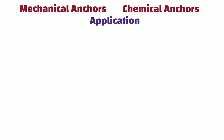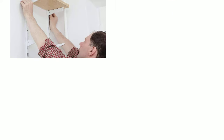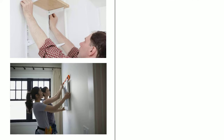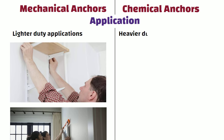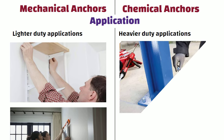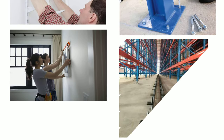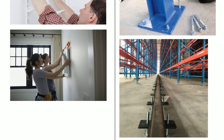Applications: Mechanical anchors are generally suitable for lighter-duty applications such as attaching shelves or hanging pictures, whereas chemical anchors are typically used for heavy-duty applications such as securing structural elements or installing machinery.